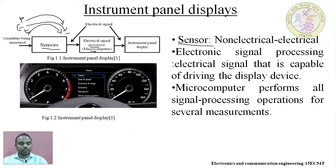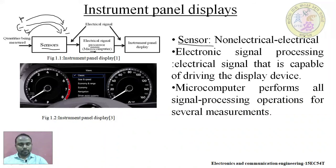The signal from various devices is not in a suitable form; we have to make it compatible for the instrument panel display. The signal processing operations to be performed are: number one, noise removal; number two, amplification; number three, analog to digital conversion, which involves sampling, quantization, and encoding. After performing these operations, the signal is made suitable for the instrument panel display.